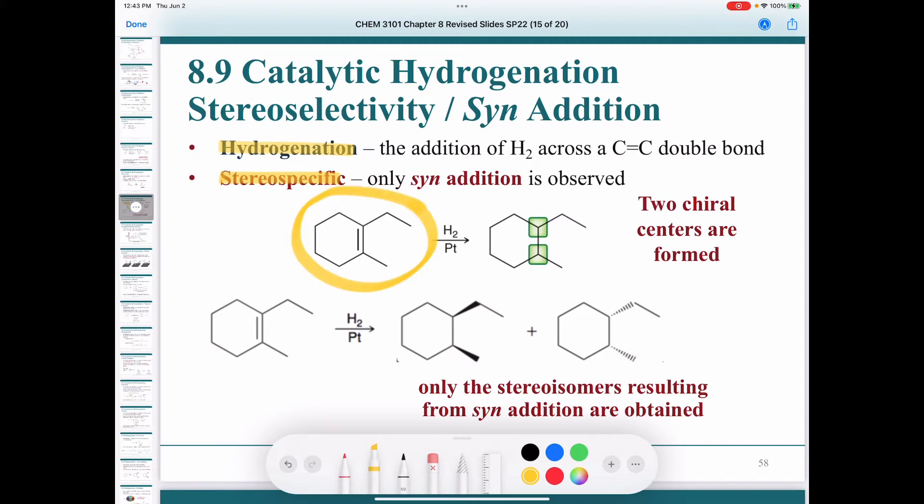If you take this alkene and subject it to hydrogenation conditions, what you end up with is a compound that has two chiral centers. Now you might remember the formula for the maximum number of stereoisomers possible is 2 to the power of N, where N is the number of stereocenters. So you might think we could make 2 to the power of 2 or 4 possible products. But in fact, we only observe 2 products in this specific reaction. Why? Because we only add the hydrogen atoms in a syn fashion. We get no anti-addition. We end up with this pair of enantiomers.